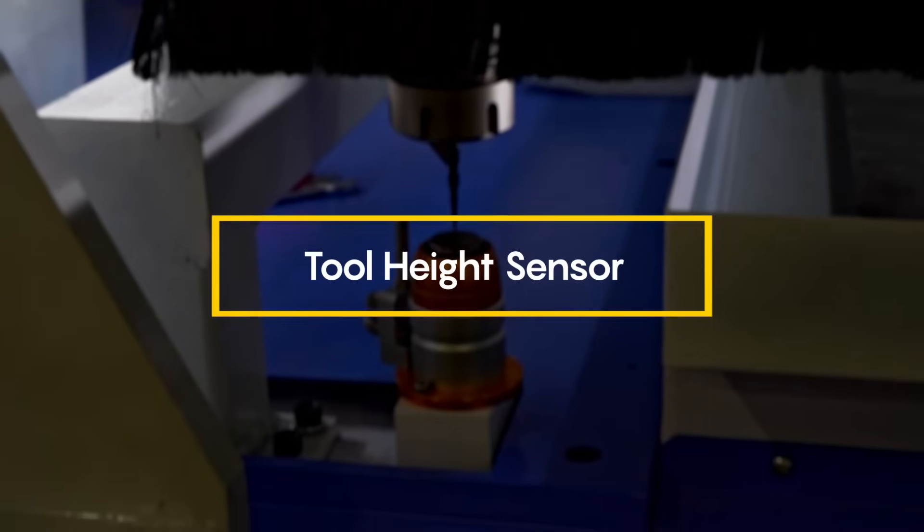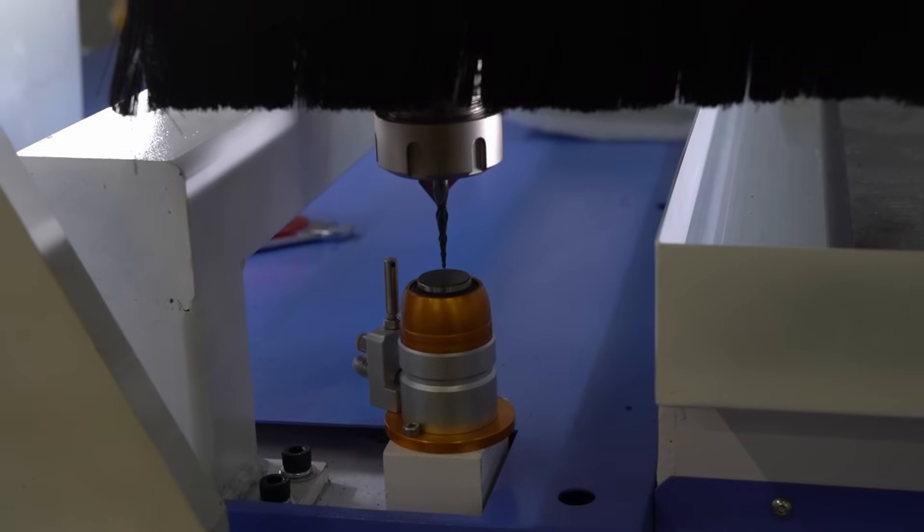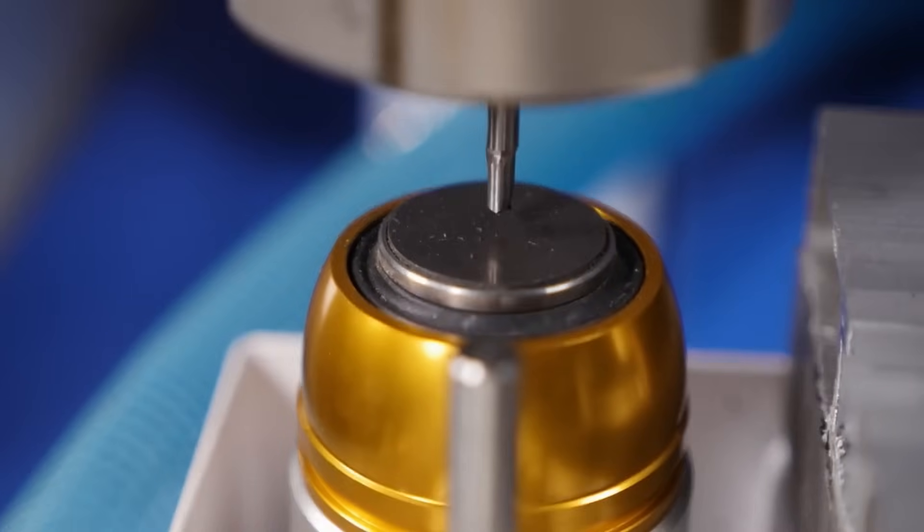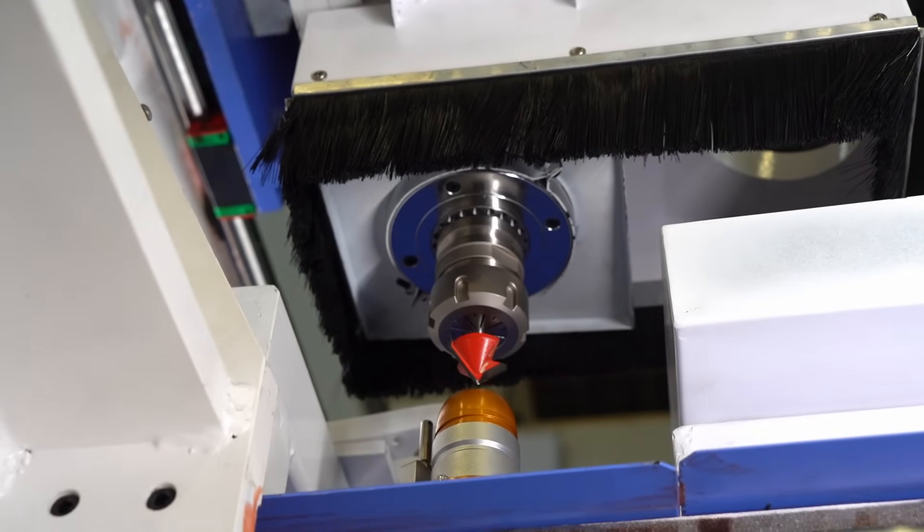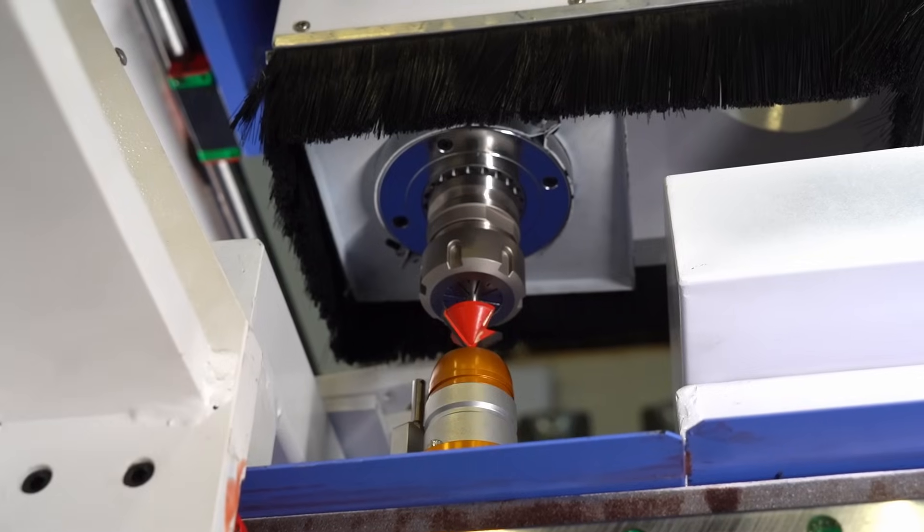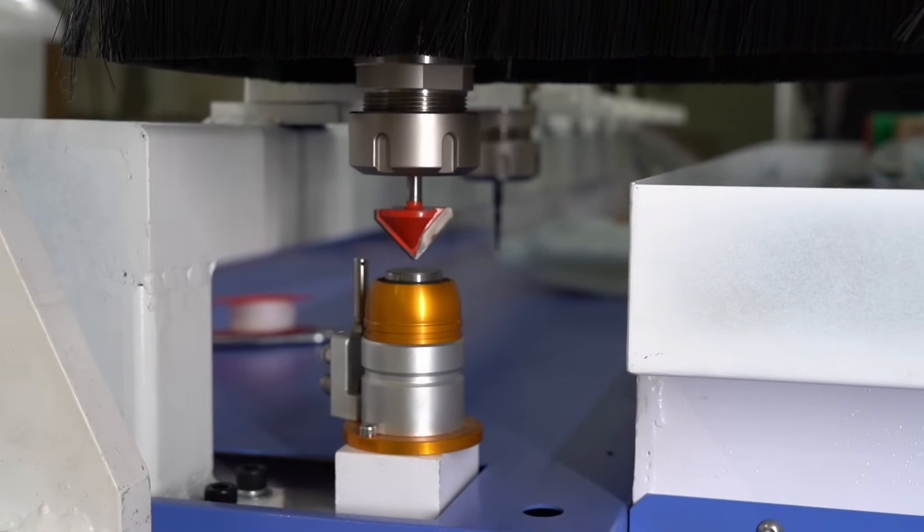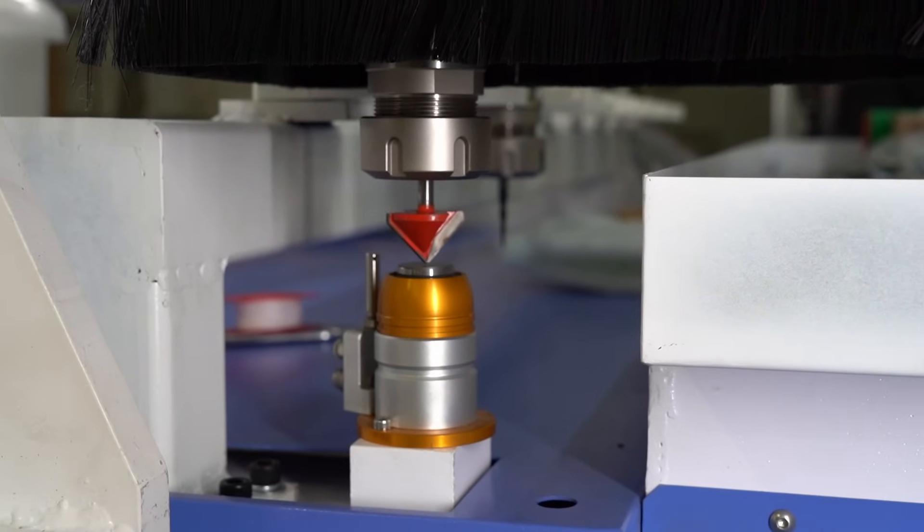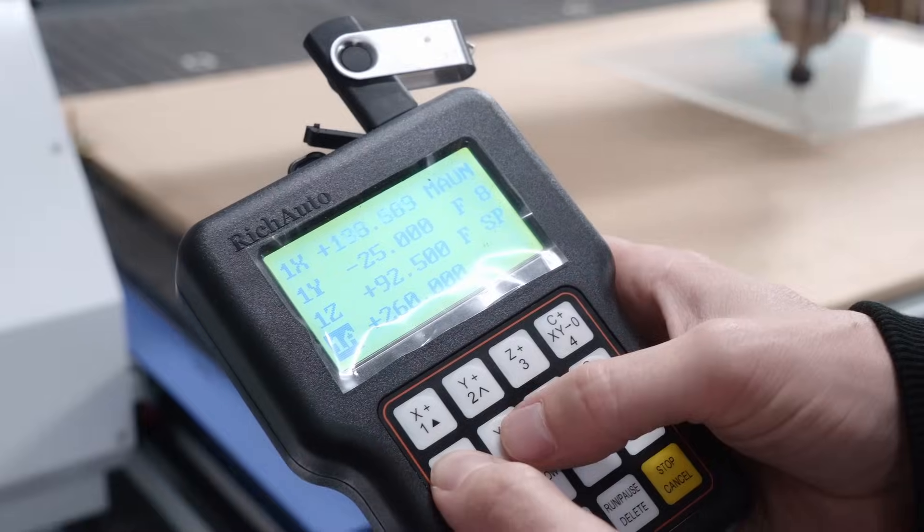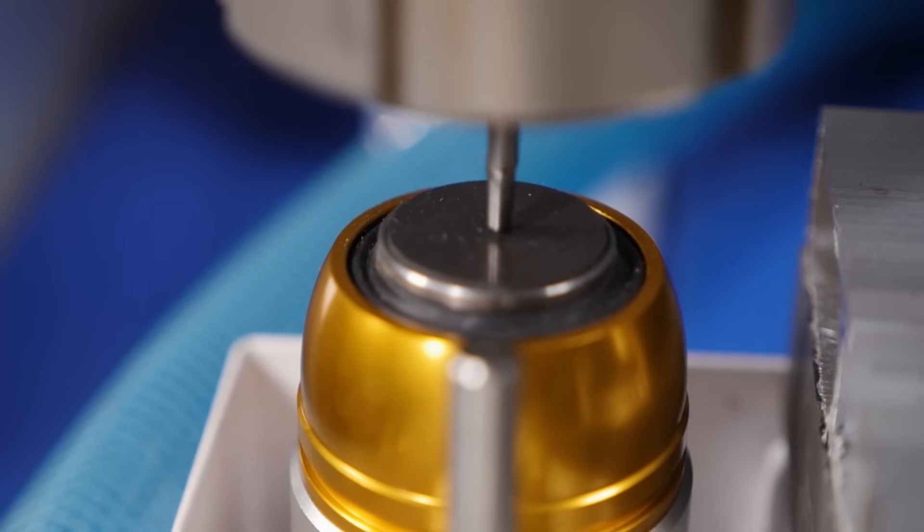Tool height sensor. The tool height sensor is designed to determine the height of the tool along the Z axis. It works by closing the contact when the tool touches the metal plate of the sensor. It simplifies the change of the cutting tool and it's very easy to use. The sensor housing is resistant to mechanical impacts, chips and coolant. We have reviewed 8 options that will make working with the milling machines easier and more efficient.